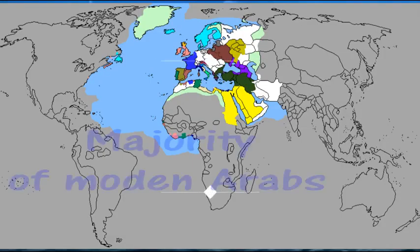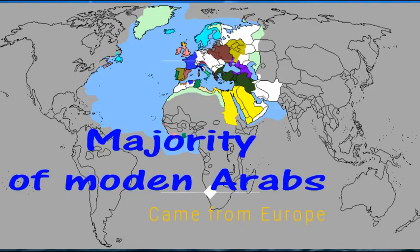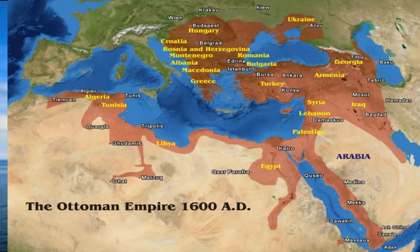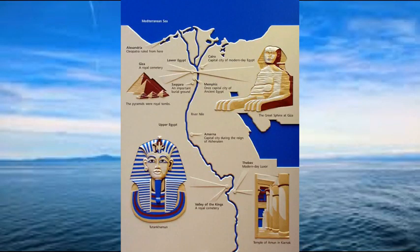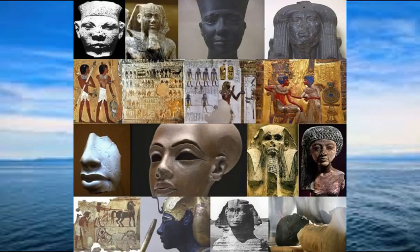The majority of modern Arabs are of European stock. They came to Africa via Turkey. They also were left there by the Romans and the Greeks when they conquered that part of Africa, and they intermarried with indigenous Gazetted African Berber tribes. Today they are found in Northeast Africa from Morocco across the North of Africa.